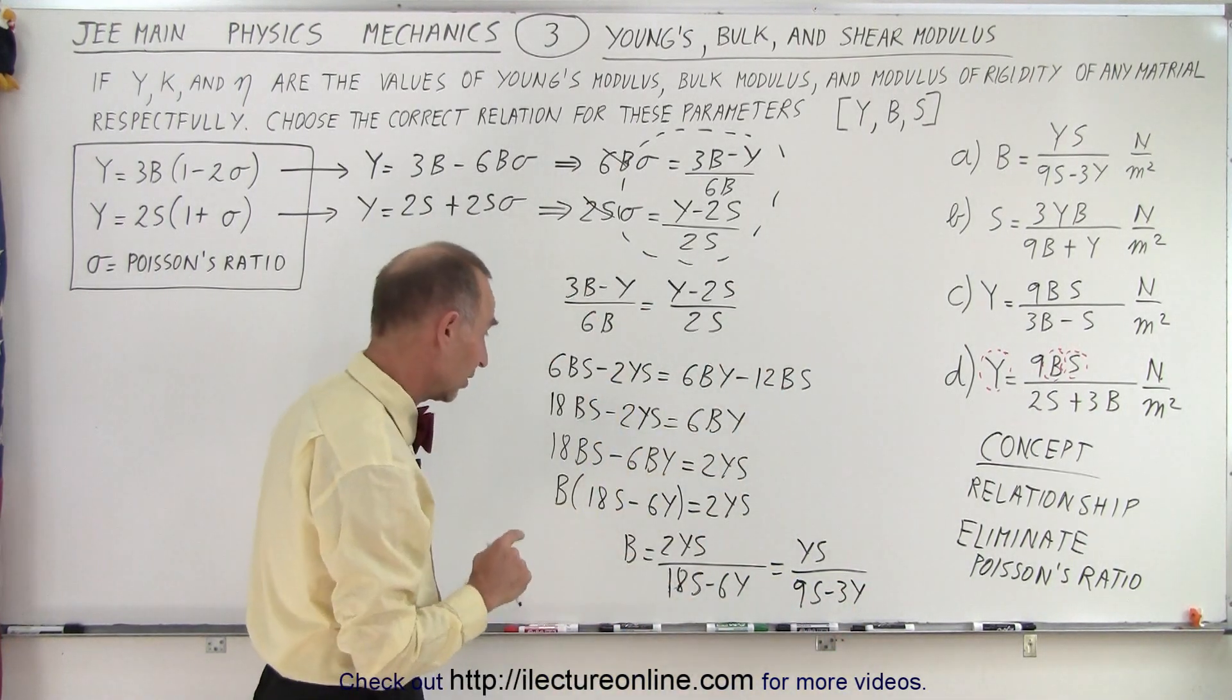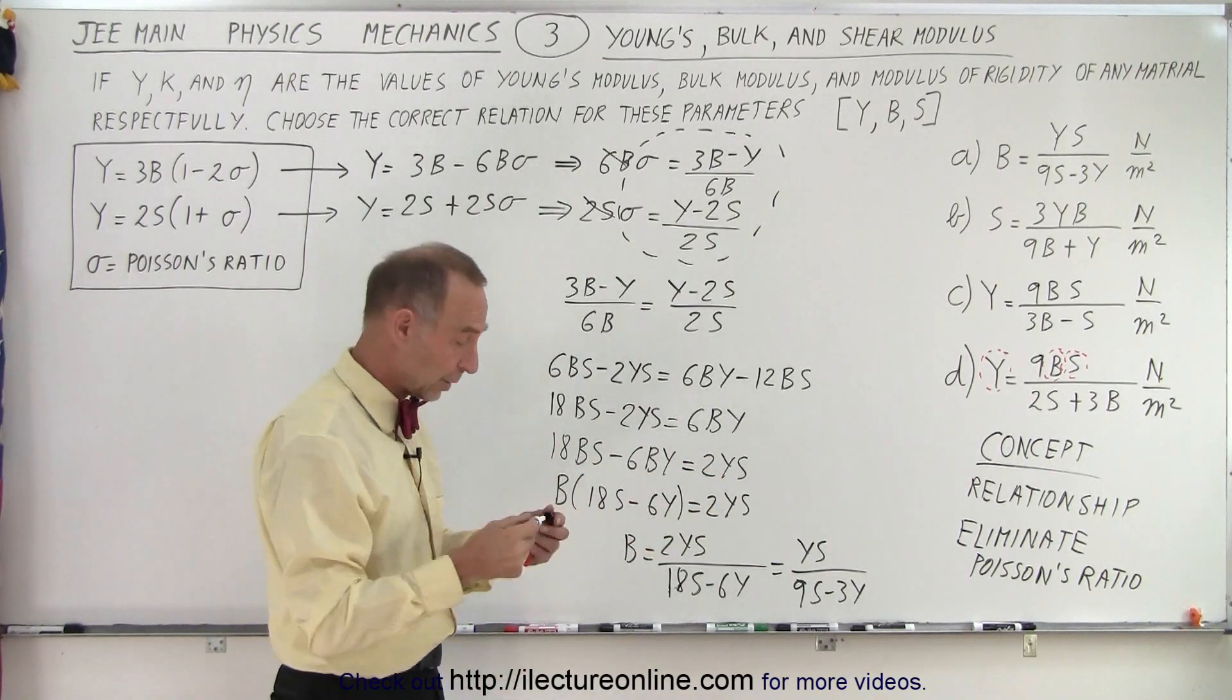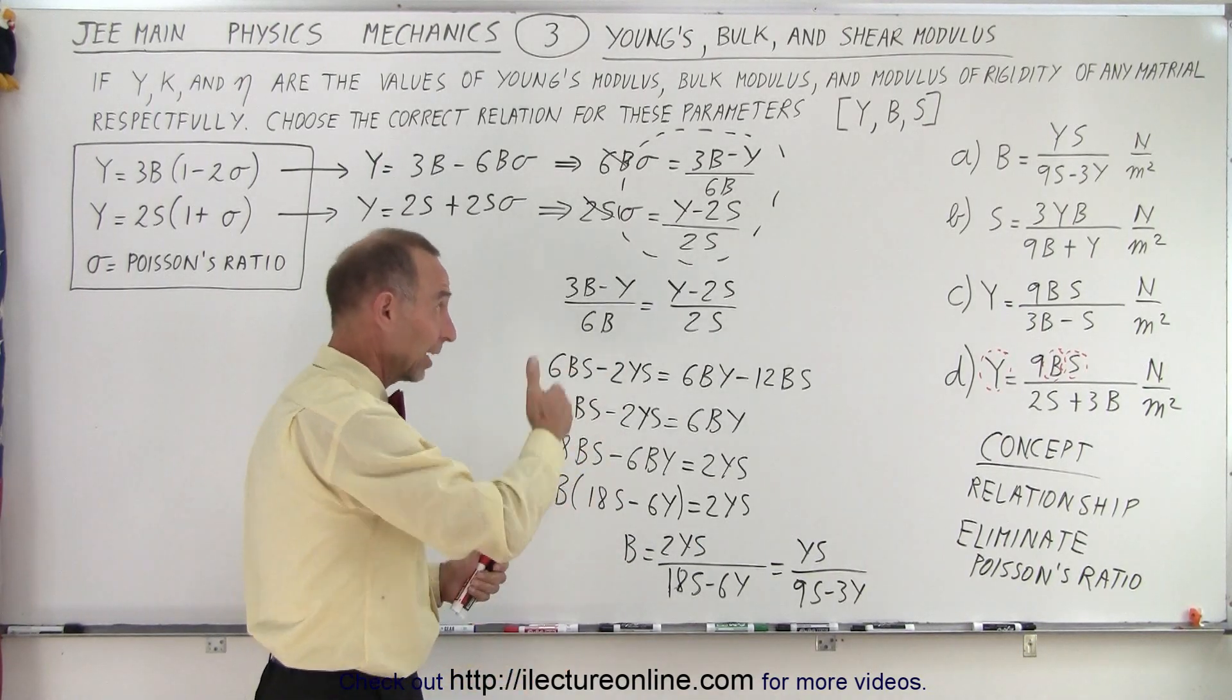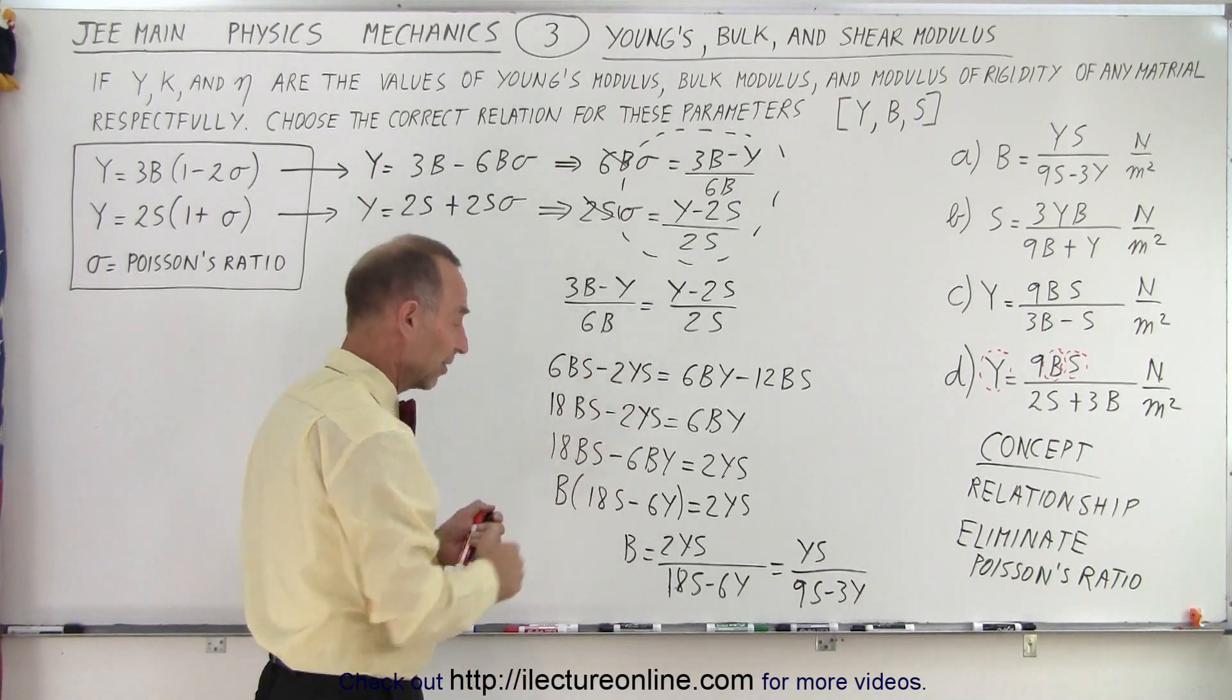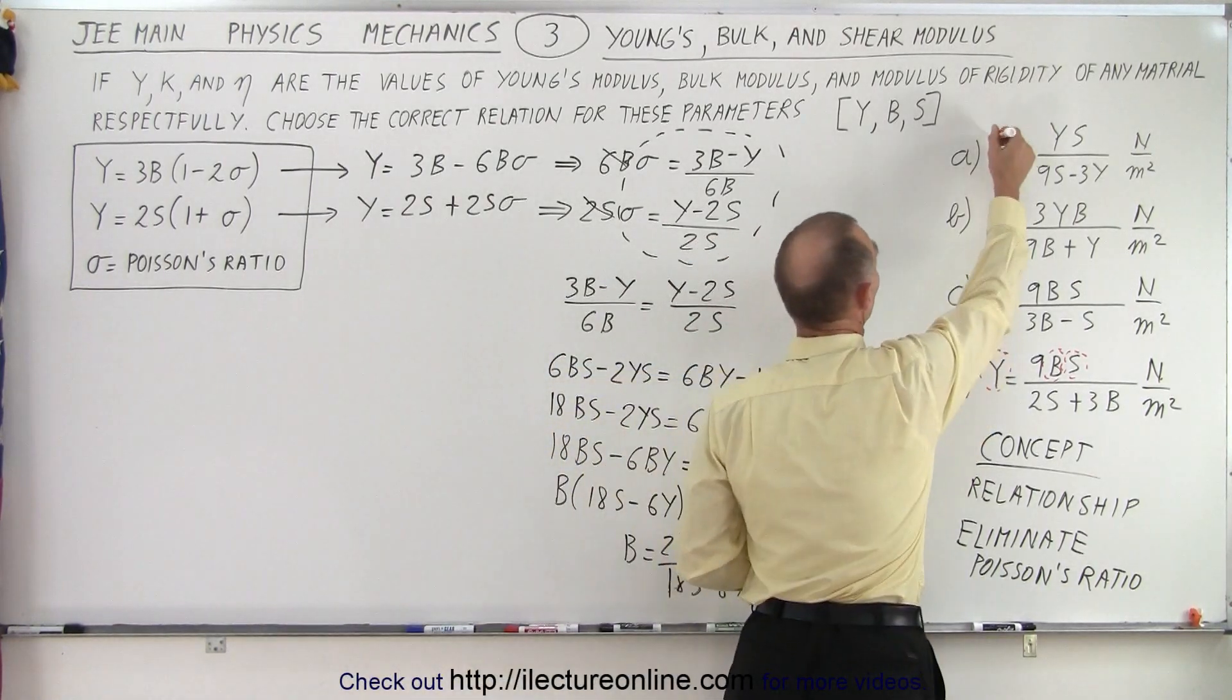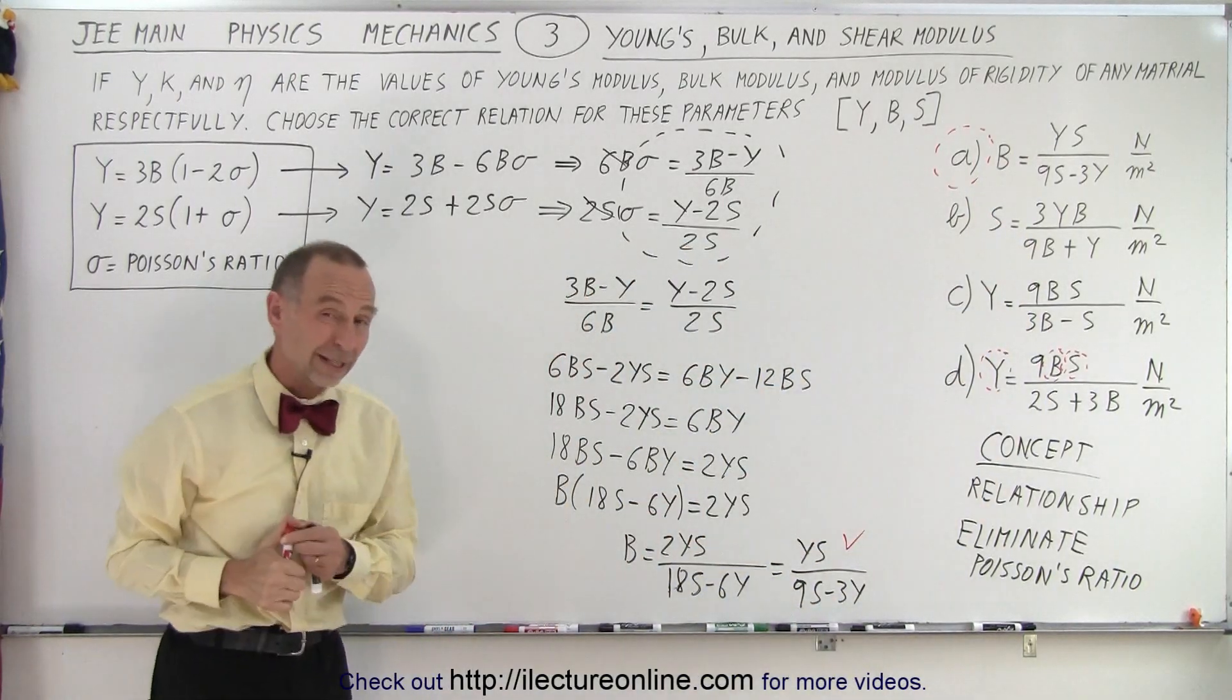Is that our first answer? And notice B equals YS over 9S. Wow, first time we got it right, we're lucky. Because if that was wrong, we'd have to go to the next one, the next one, solve for S, solve for Y to see which one was correct. But it looks like this matches answer A. And so that would then be the correct answer for that particular problem.